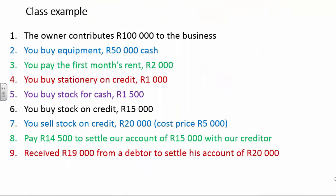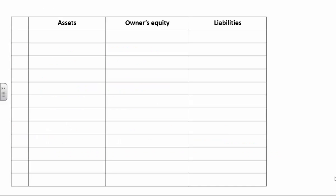We're going to take this class example and see how each transaction affects the accounting equation. Every transaction has a double entry — it's called the double entry principle. Every transaction has a double effect: one side shows where the money came from, and the other shows where the money went or what it was used for. We'll check every single time whether the accounting equation balances: are my assets equal to my owner's equity plus my liabilities?